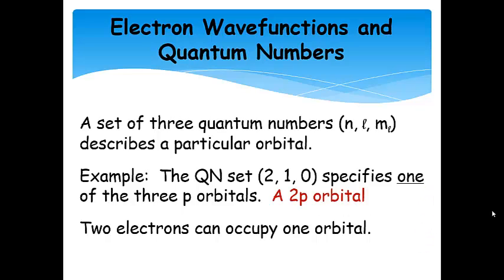It takes a set of three quantum numbers to describe a particular orbital. For instance, if I make the set N equals 2, L equals 1, and M sub L equals 0, that gives me one of the three P orbitals. That is a 2P orbital.